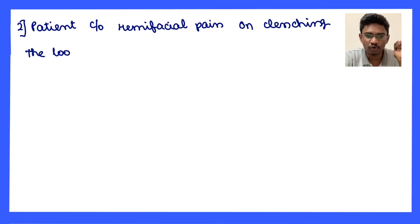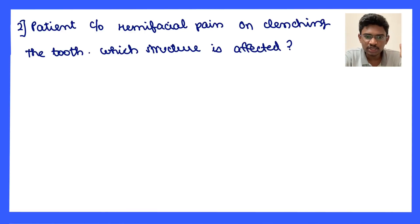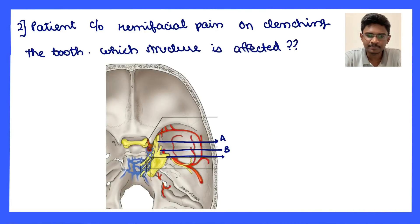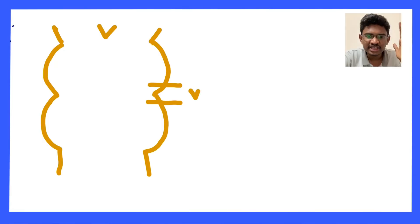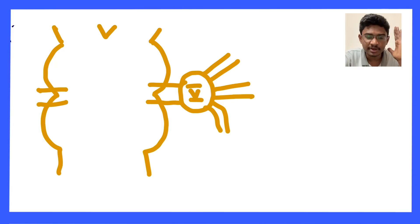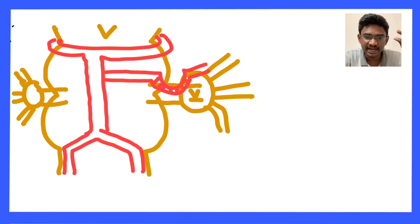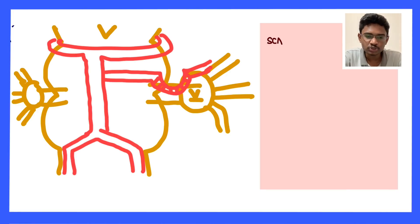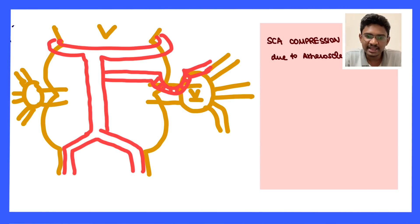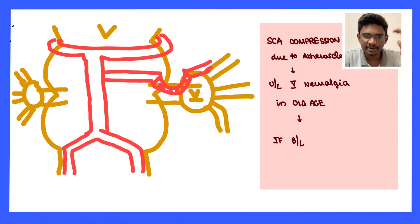Next is a patient having hemifacial pain on clenching the teeth — they have marked structures and asked which structure is affected. This history of unilateral facial pain gives a great clue towards trigeminal neuralgia. In older females, the superior cerebellar artery becomes hardened due to atherosclerosis and compresses the trigeminal ganglion — this is the main reason trigeminal neuralgia occurs.